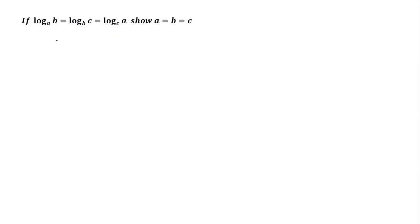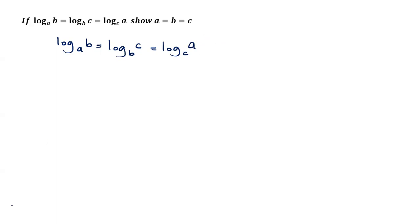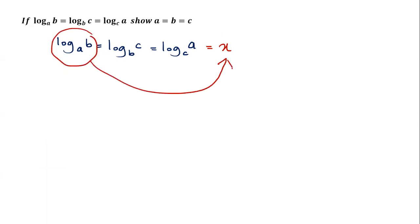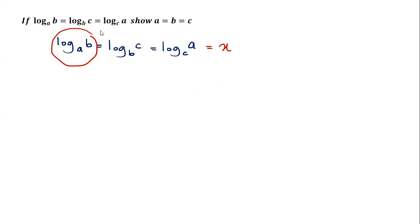Since all the logs are the same value, I'm going to represent them as x. So log_a(b), log_b(c), and log_c(a) — since everything is the same — I'm going to represent the entire log as x. That means each and every log here equals x.